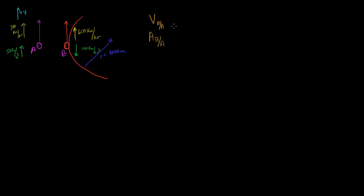The velocity of B with respect to A is the velocity of B minus the velocity of A. And the acceleration of B with respect to A is the acceleration of B minus the acceleration of A. So in order to solve this problem, we have to figure out the velocity of B, the velocity of A, and subtract them from each other, and do the same with acceleration.